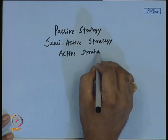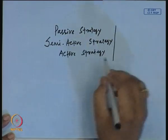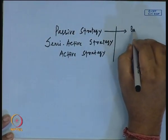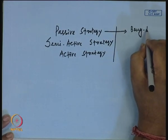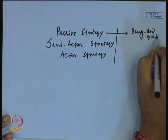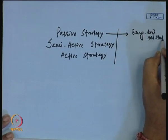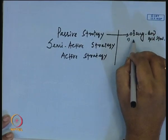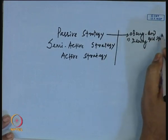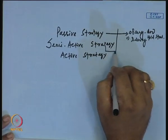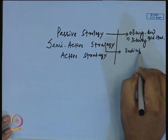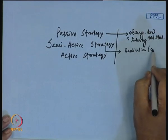In the case of the passive strategy, we discussed it extensively in the previous class. It is basically the buy-and-hold strategy and also indexing. Within the buy-and-hold strategy, we also discussed laddering. Then we discussed dedication, or what we can call cash matching.